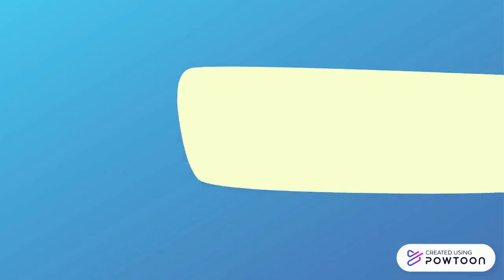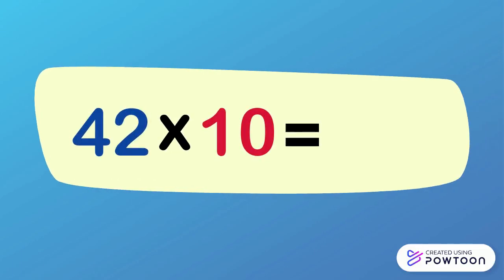42 times 10 equals 420. To multiply 42 by 10, just write 42, then put 0 to the right of 42. 42 times 10 equals 420.